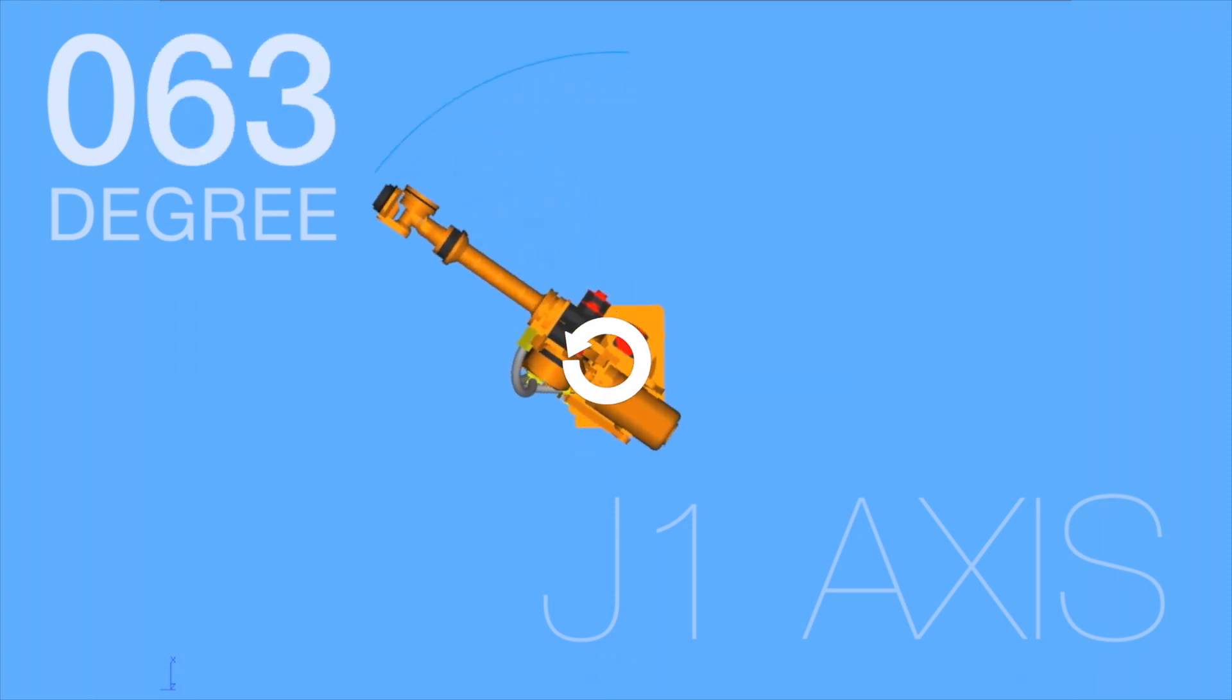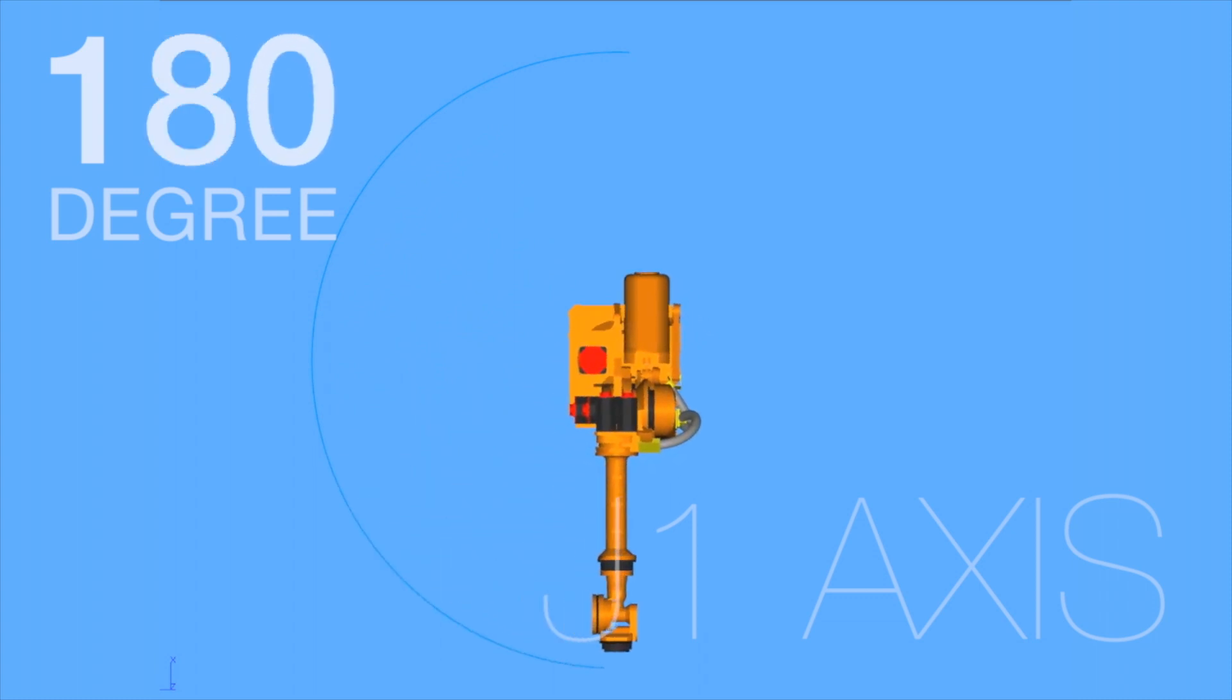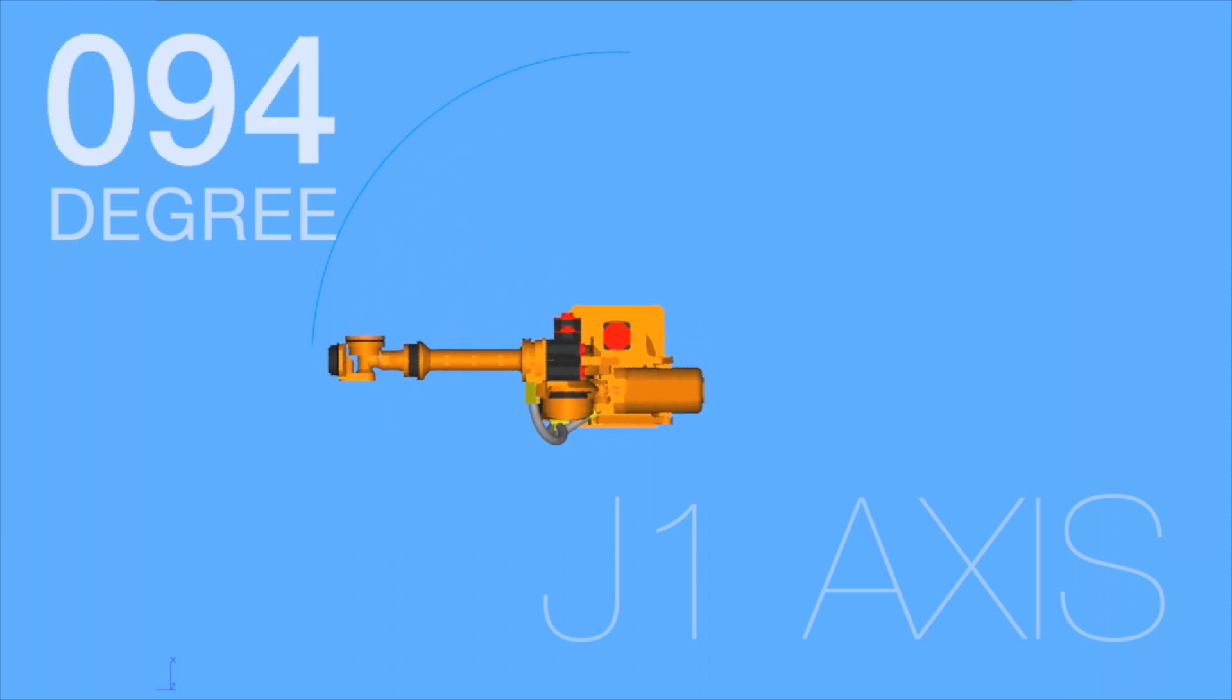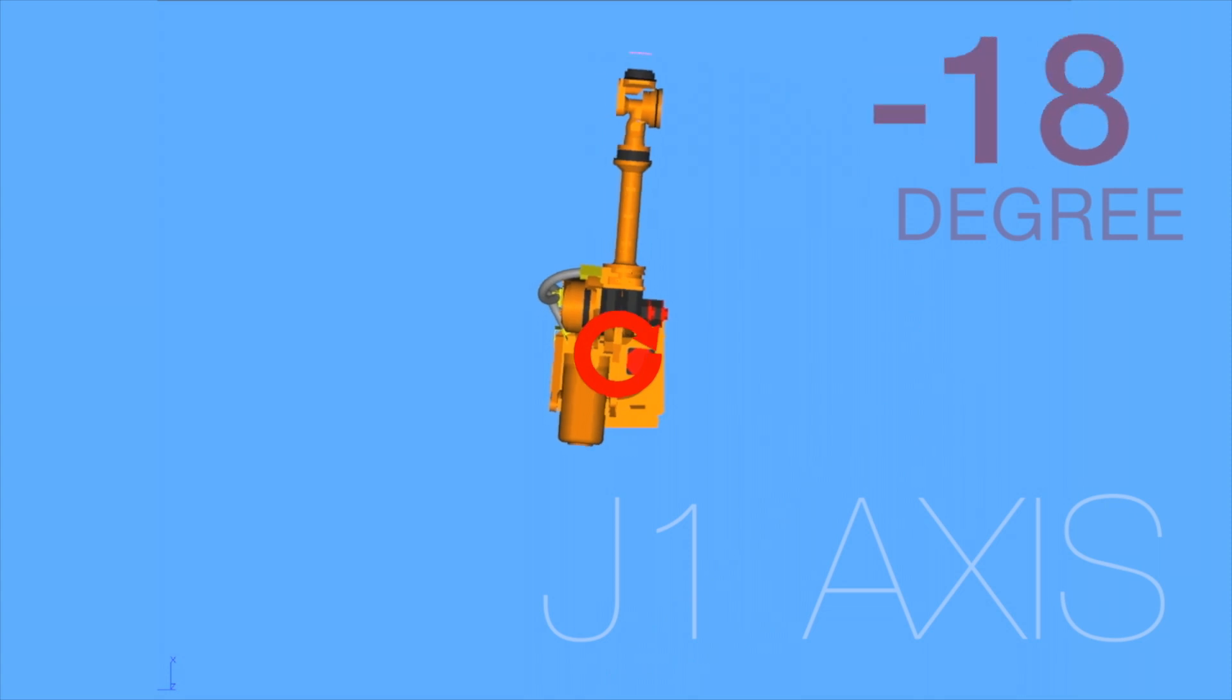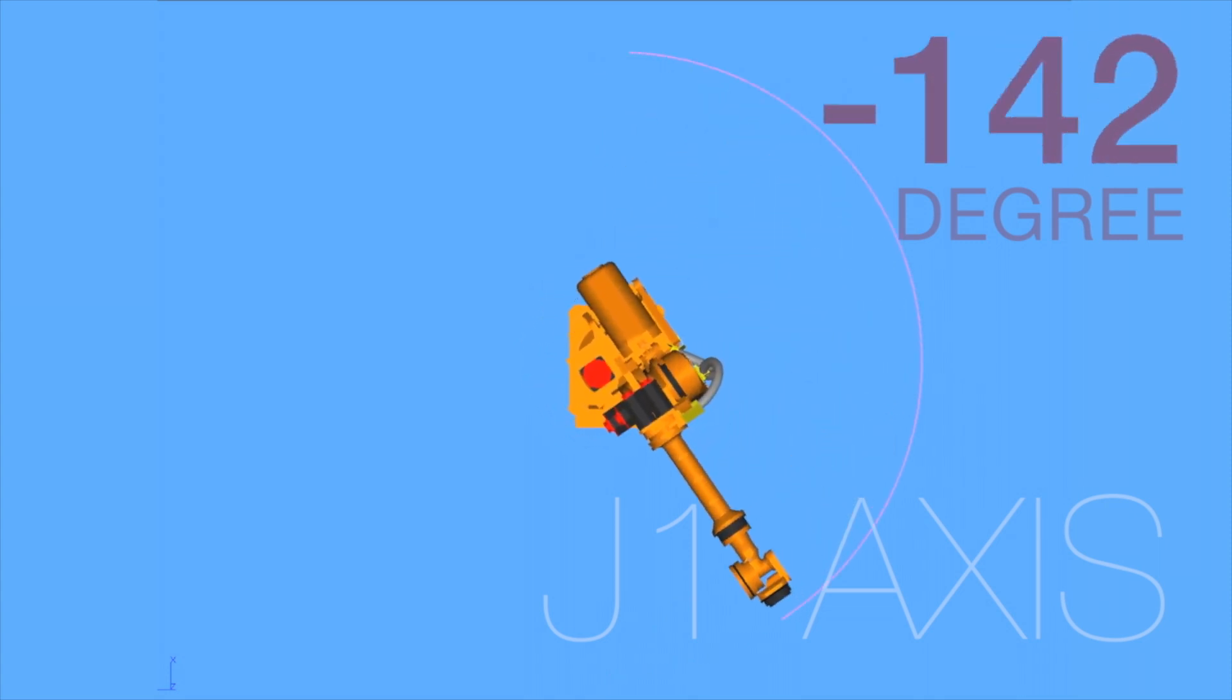Axis 1: This axis, located at the robot base, allows the robot to rotate from left to right. This sweeping motion extends the work area to include the area on either side and behind the arm. This axis allows the robot to spin up to a full 180-degree range from the center point.